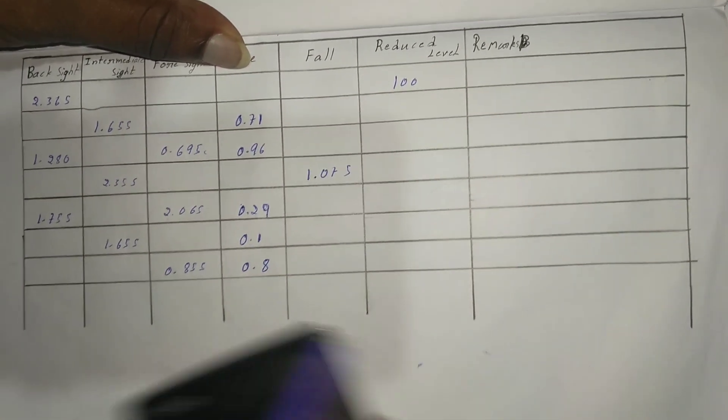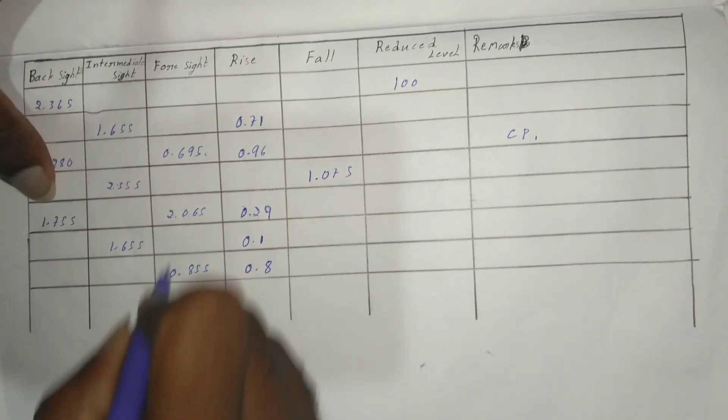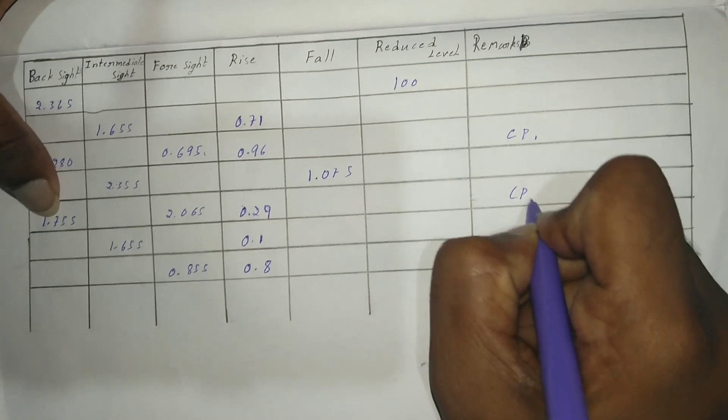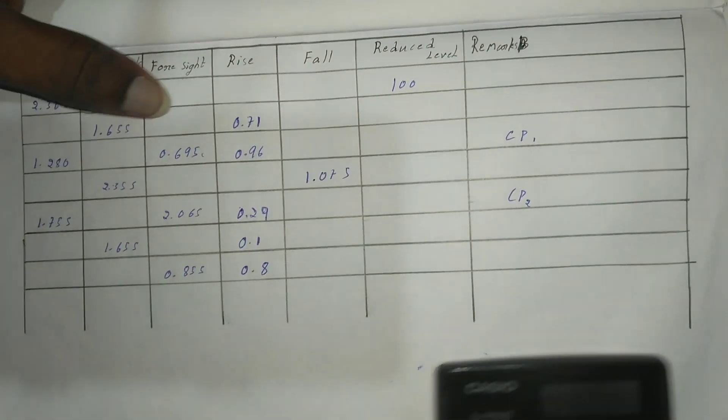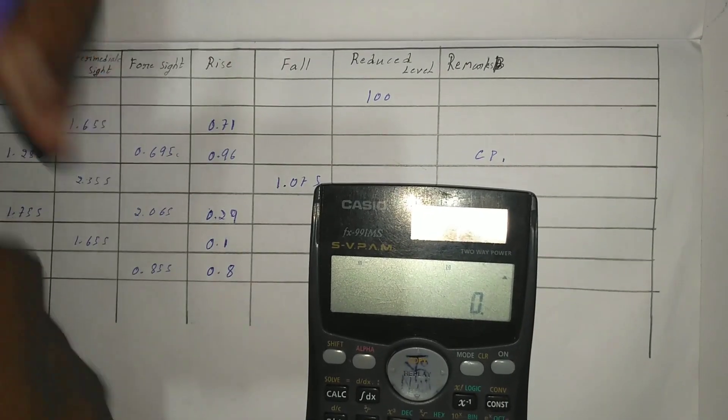Let's first mark the change points. Here the instrument is changed, and here also the instrument is changed. Change point 1 and change point 2. Let's find the reduced levels. It is very easy when compared to height of instrument method.